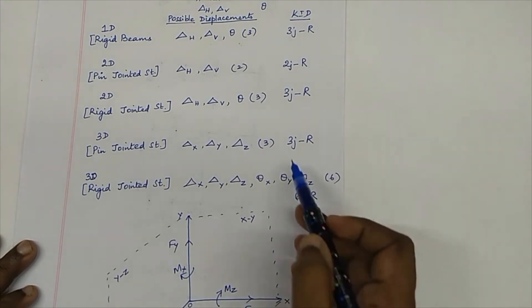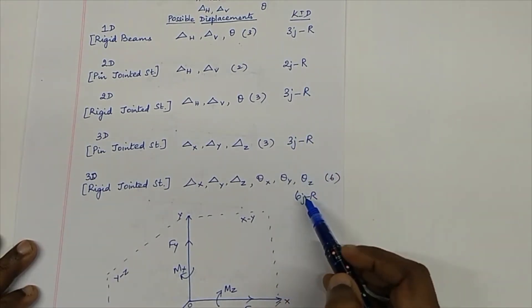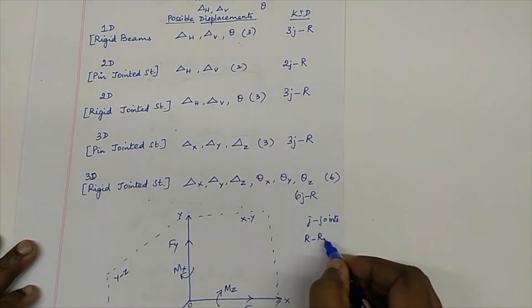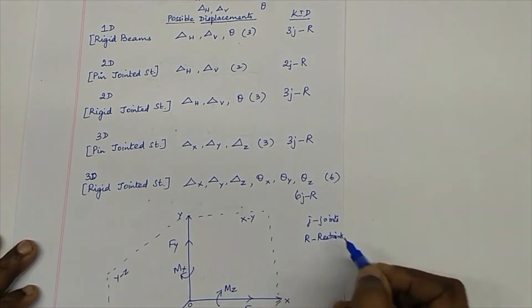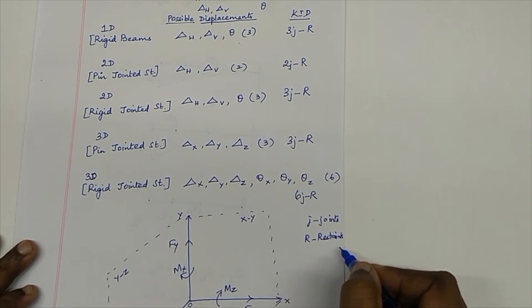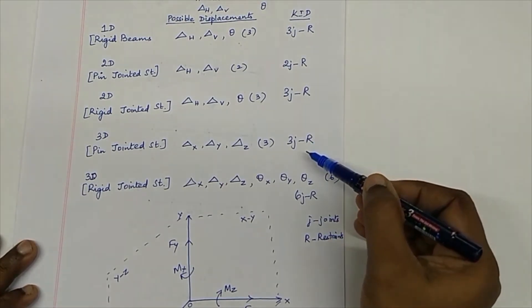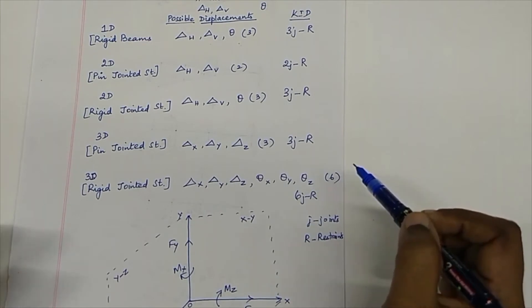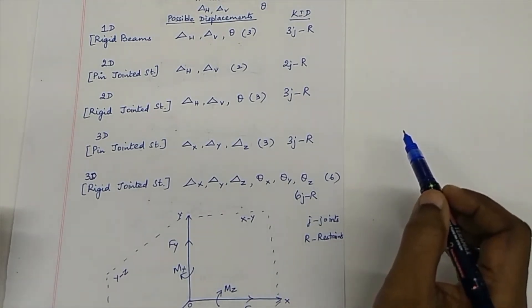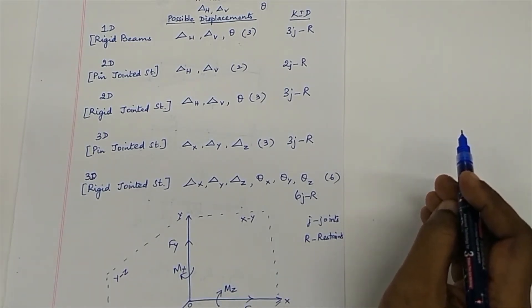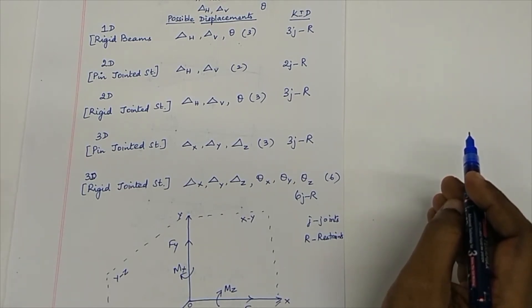For any structure, if we know j — the number of joints — and r — the redundancies or restraints at the support — we can determine the degree of kinematic indeterminacy, otherwise known as degrees of freedom. Kinematic indeterminacy deals with displacements and is used in the stiffness method of analysis, since it is a displacement method. In static indeterminacy, we consider forces; hence we make use of static indeterminacy in the force method of analysis.